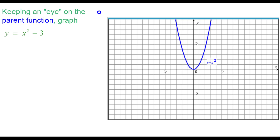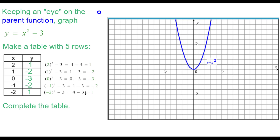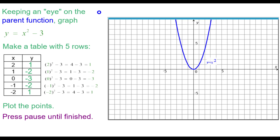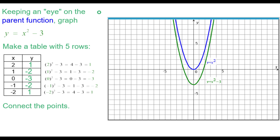Now keeping an eye on this parent function, we want to graph y equals x squared minus 3. We will start by making a table with 5 rows. Go ahead and complete this table — press pause until you are finished. Putting in the values for the table, press pause if you need to see how those values were arrived at. Go ahead and plot those points, then connect them. We get y equals x squared minus 3 in green.